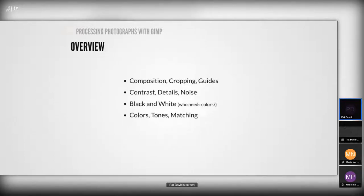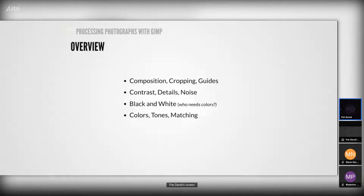I actually use G'MIC extensively for specific image processing algorithms. Fabulous project, highly recommend it. As an overview of what I want to get through today — it's a tough topic, the overall subject of photography is huge, and how to approach editing is just a large domain. I'm trying to skim the top of the current state of fun tools for image processing in GIMP. Today we'll cover composition, cropping and guides, contrast, details and noise, black and white image processing, and colors, tones, and color tone matching.